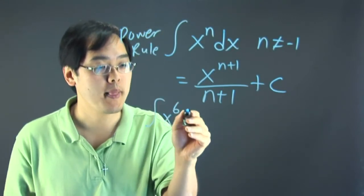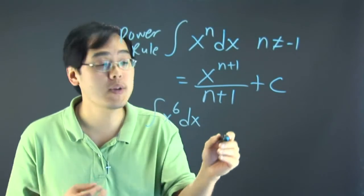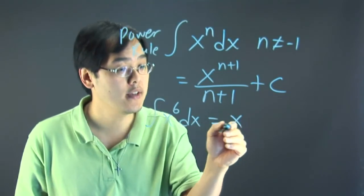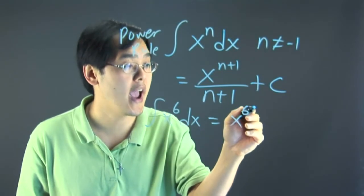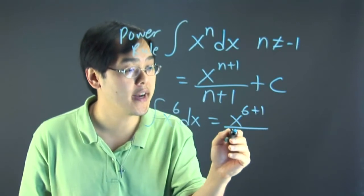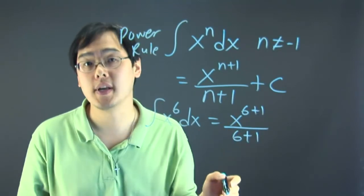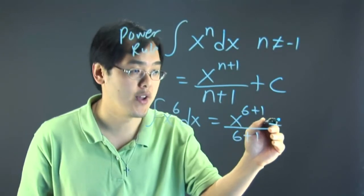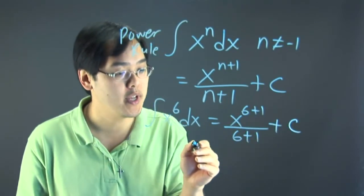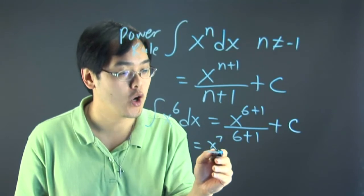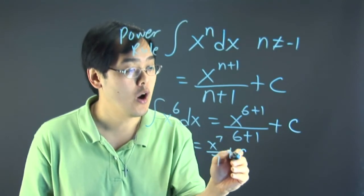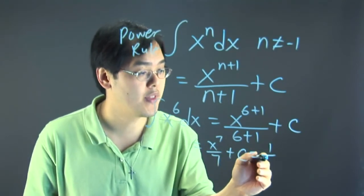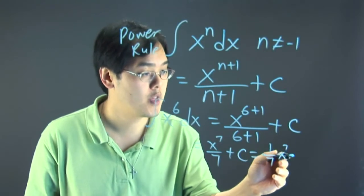supposing you're integrating x to the sixth. What you're doing here is you're taking the sixth, x to the sixth, you're adding one to the sixth, but then you're dividing by the same six plus one. So again, there's a match in the denominator as you are with the exponent and then you're adding C to it. So this will be x to the seventh over seven plus C or some people like to write it as one seventh x to the seventh plus C.